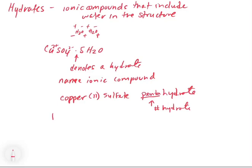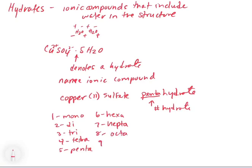With the hydrates, you put a blank and then hydrate. In the blank, you have to denote the number of the hydrate. In this case, it's five, so we denote that with penta, pentahydrate. One would be mono, two would be di, three is tri, four is tetra, five is penta, six is hexa, seven is hepta, eight is octa, nine is nona, and ten is deca.